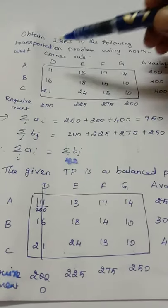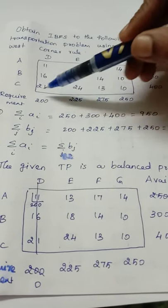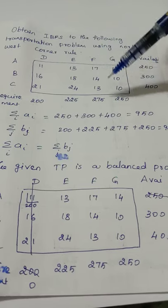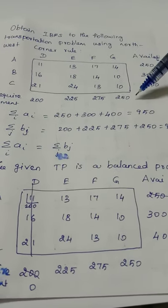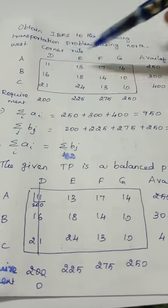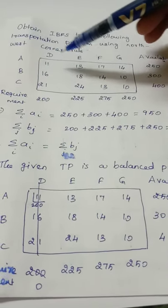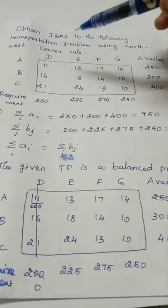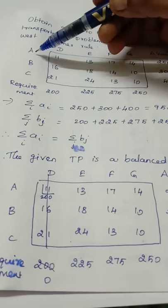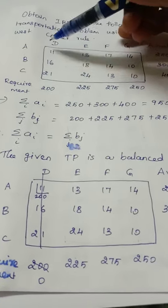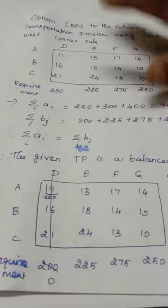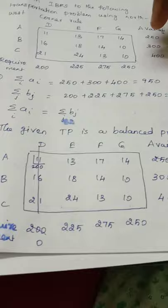These four are destinations. For destination D they require only 200 units of the product. Similarly, destination E requires 225 units, F requires only 275 units and G requires 250 units. This is the basic concept of our transportation problem. Inside the table I gave some values known as cell values or cost matrix. The value 11 means to transport one unit of the product from source A to destination D we need 11 rupees. Likewise the other values can be assumed similarly.